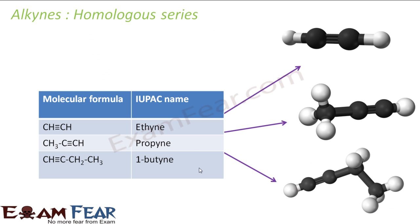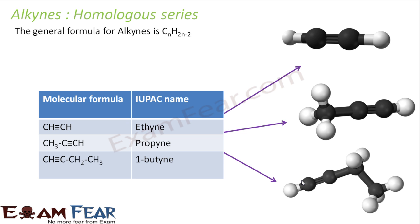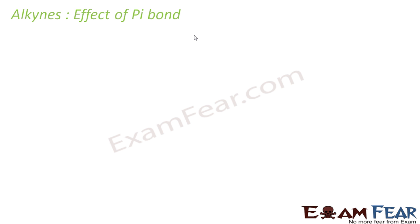Looking at the homologous series: ethyne has a triple bond, then propyne, then butyne. The general formula for alkynes is CₙH₂ₙ₋₂. Compare this to alkanes which are CₙH₂ₙ₊₂ and alkenes which are CₙH₂ₙ — alkynes have 2 fewer hydrogens than alkenes.